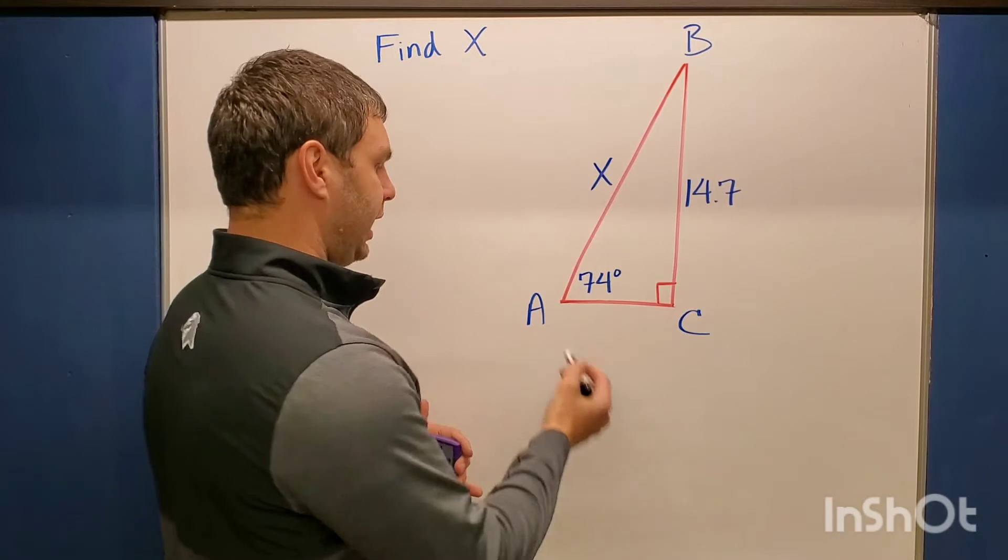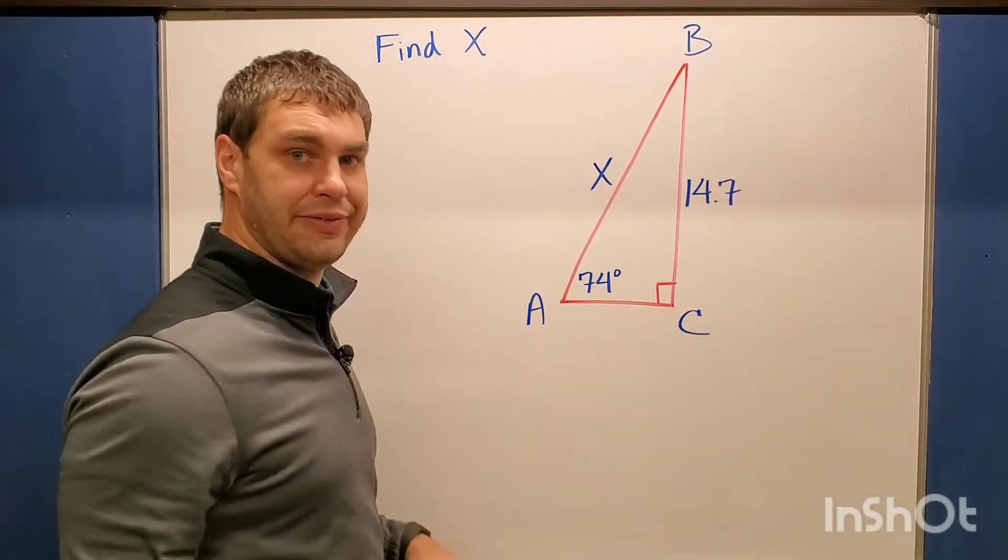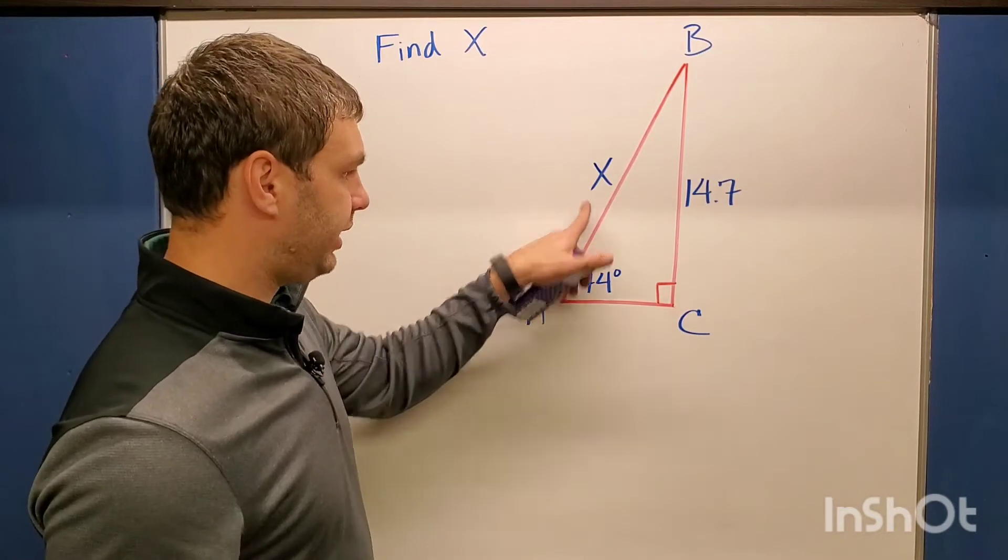Let's look at what we have. We have angle A here, which is 74 degrees, side BC, which is 14.7, as well as we're looking to find our hypotenuse X.